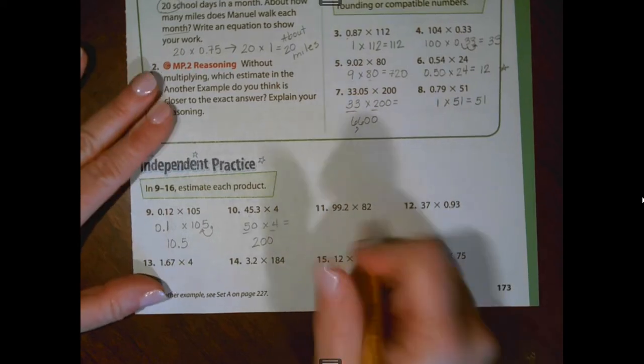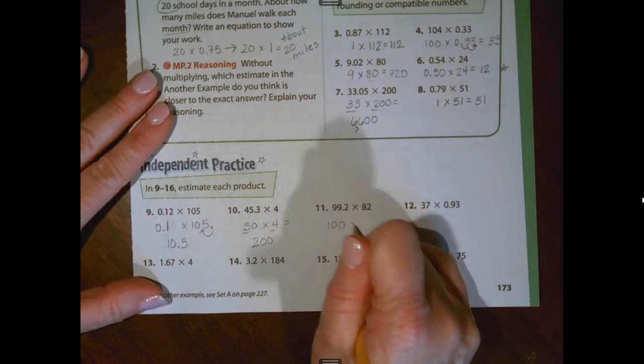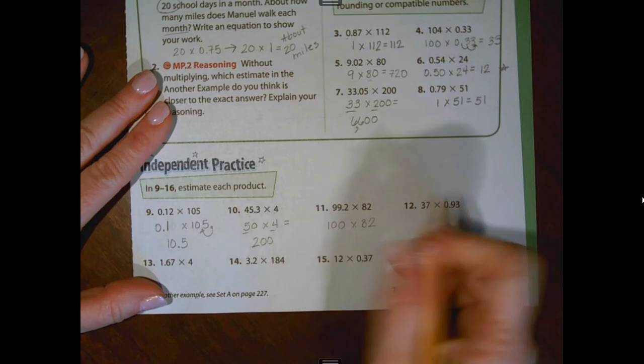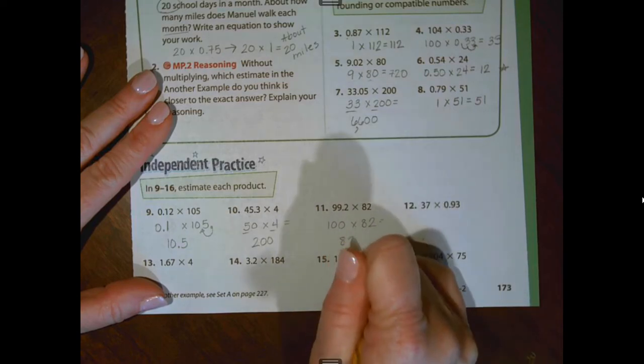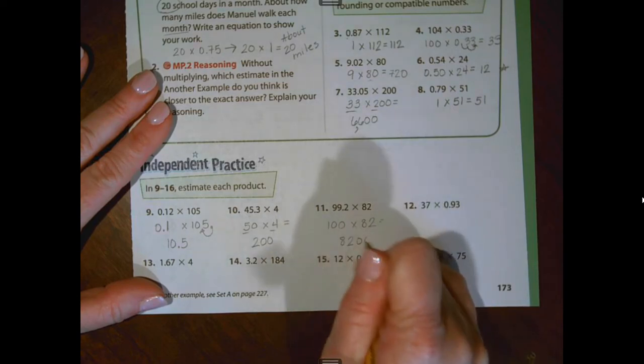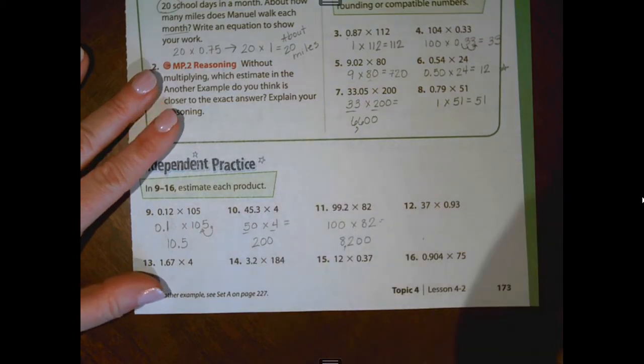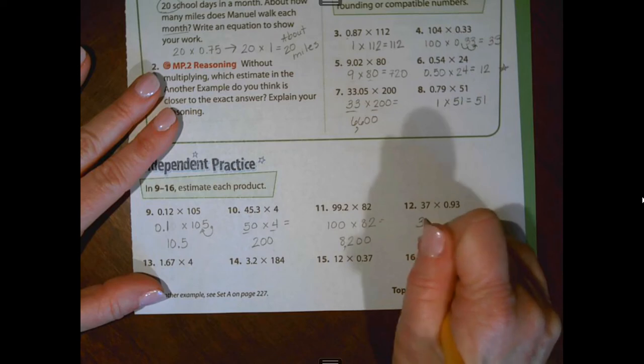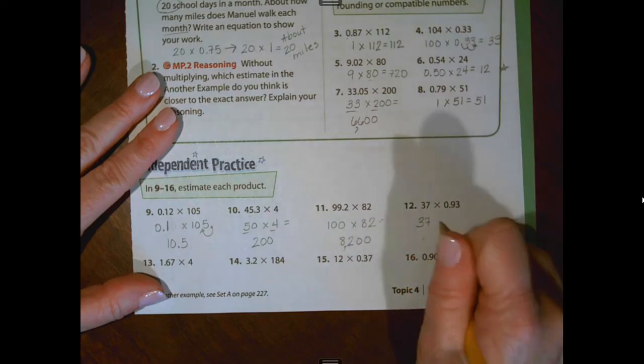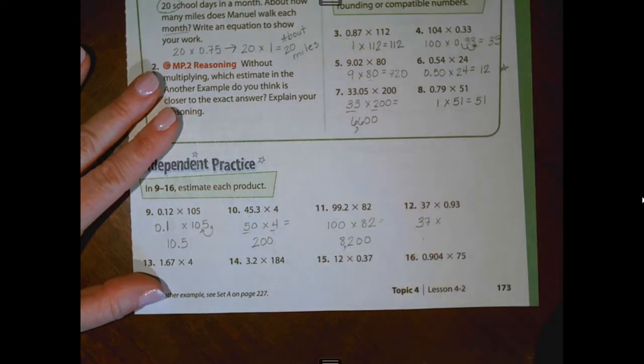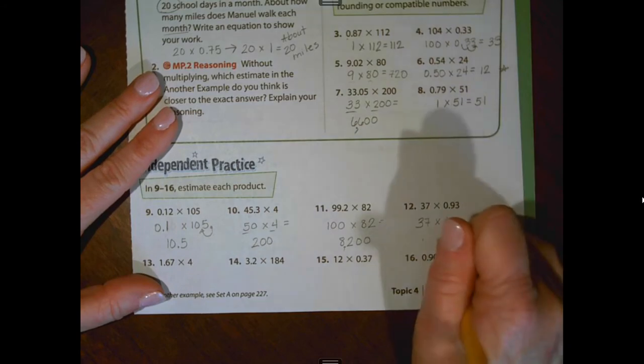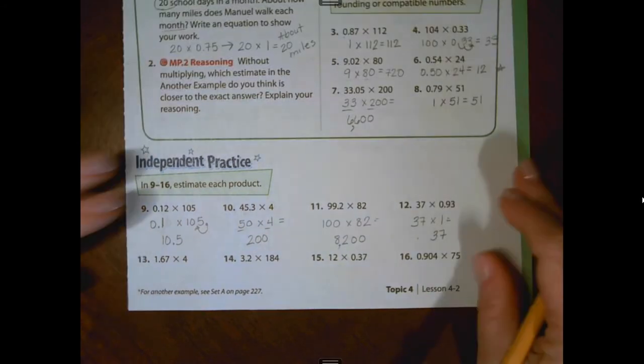This one right here, I'm going to round 99 to 100, and I know that 100 times 82, I'm just going to be 82 with two zeros annexed to it, so I get 8,200. Number 12, I'm going to leave the first factor 37, and I'm actually going to round 0.93 up to one whole and get a quick estimate of 37.